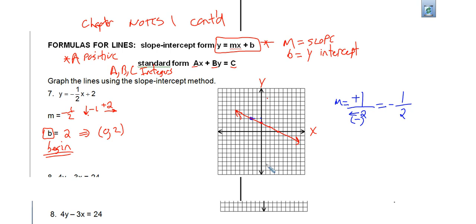On problem number eight, looks like I can't move this machine very well. So, I'm just going to use this graph that we have right here. And we're going to take this 4y minus 3x equals 24. And we're going to try to graph that using the slope-intercept formula. So in order to do that, I have to solve for the letter y.